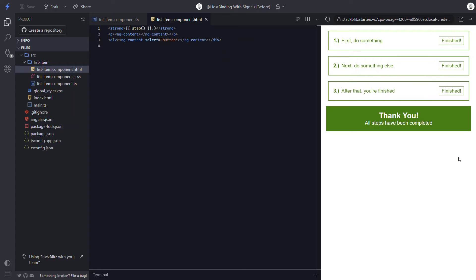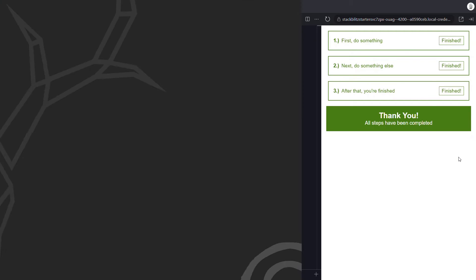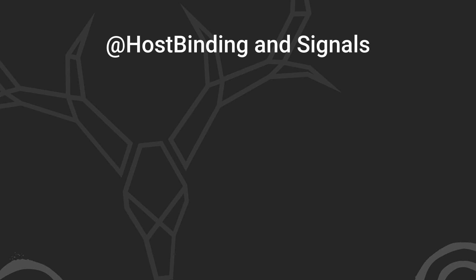At some point, the Angular team will probably have a native solution for signals with host bindings, but for the time being, we need to be a little clever. One way we could do it is use a getter function and simply return the value of the signal input in that function. That would work, but it would run more than it needs to. Instead, we can use an effect. This way, it will be optimized to only update when the value of the signal input has changed, and that's what we're going to do here.